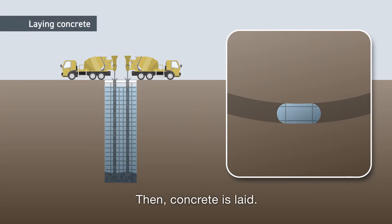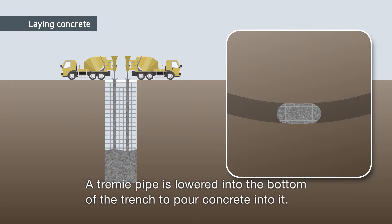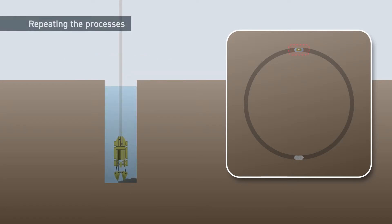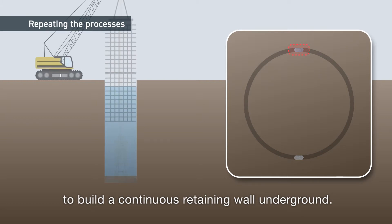Then, concrete is laid. A tremie pipe is lowered into the bottom of the trench to pour concrete into it. These processes are repeated to build a continuous retaining wall underground.